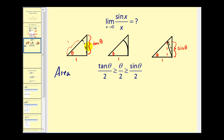Therefore this would be the height of this first triangle. Remember the area is equal to one-half base times height, but one-half times one times tangent theta would give us tangent theta divided by two. So that would be the area for this larger triangle.